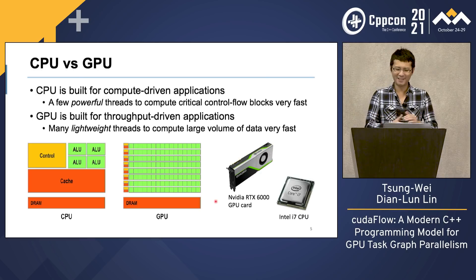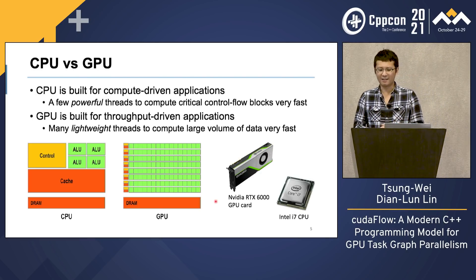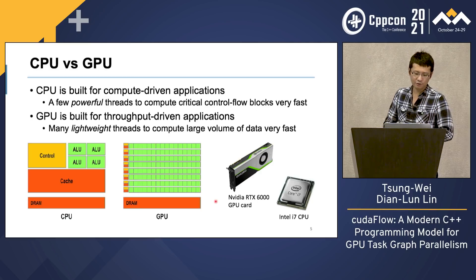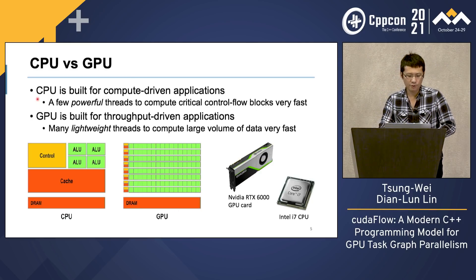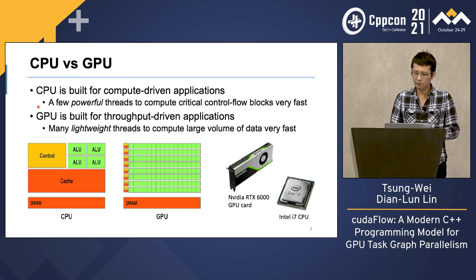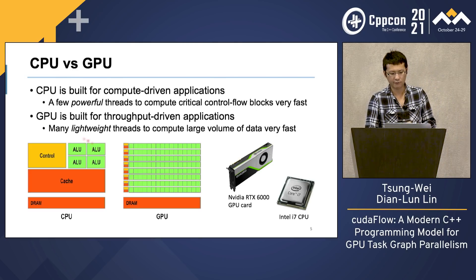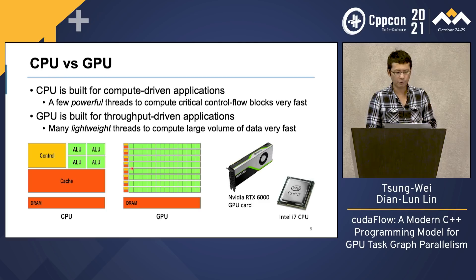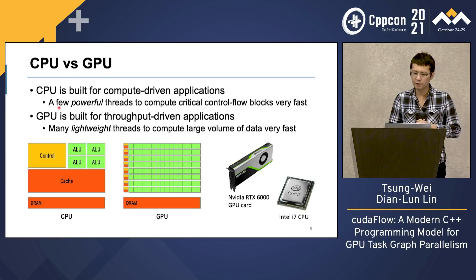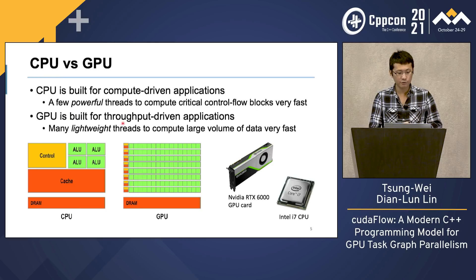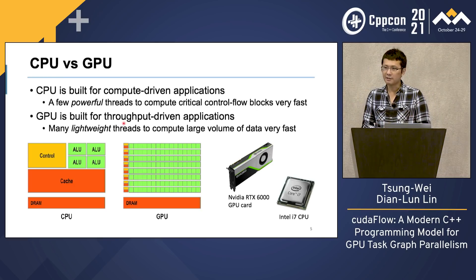That doesn't mean GPU is going to replace CPU, but it does highlight the need for heterogeneous computing using CPU and GPU together to achieve complementary performance benefit. In CPU, we have a few powerful threads and arithmetic logic units to compute control flow very fast. In GPU, we have many lightweight threads to compute large volumes of data very fast. CPU is primarily built for compute-driven applications requiring frequent control flow and irregular graph computational patterns. GPU is built for throughput-driven applications such as matrix operations and data-intensive computing.